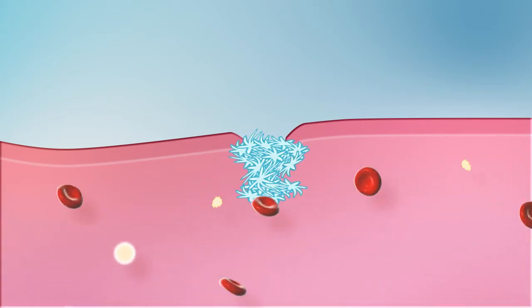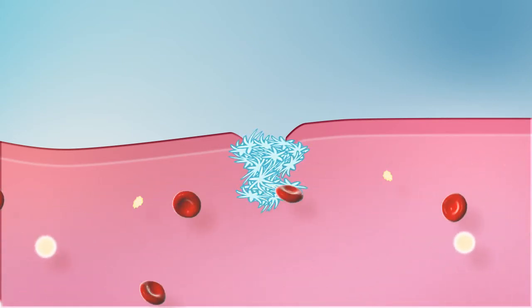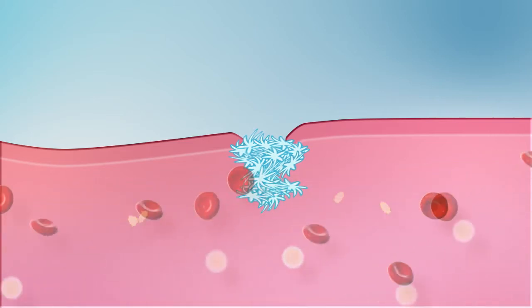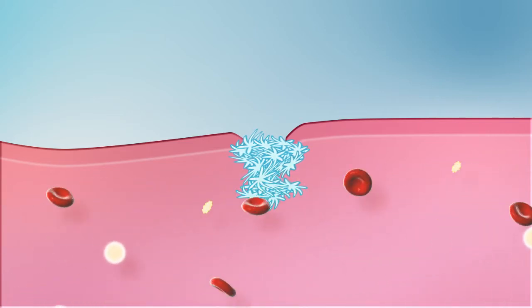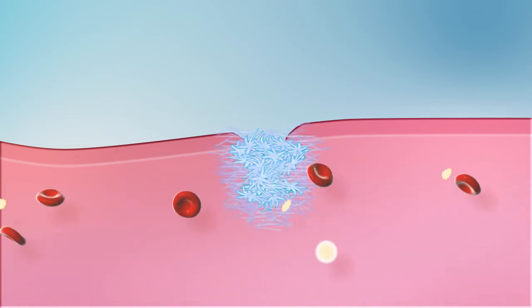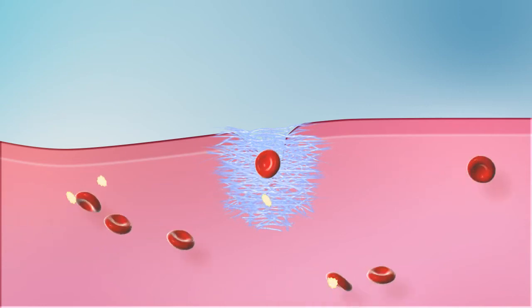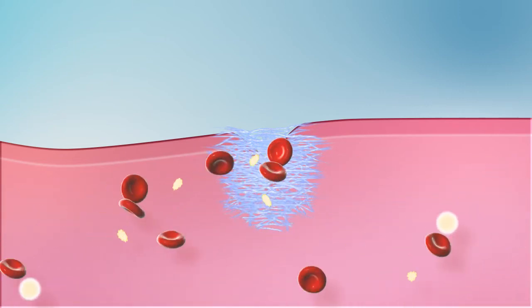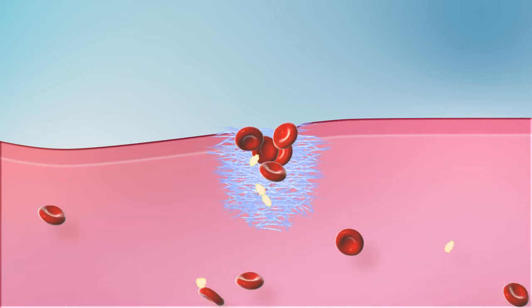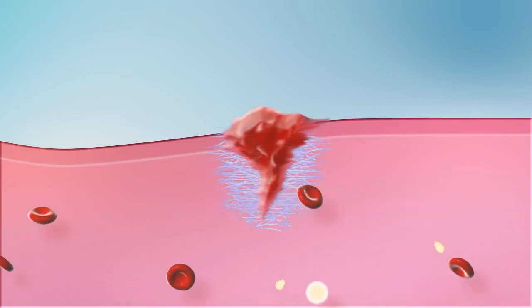Thrombin later converts soluble fibrinogen molecules into insoluble fibrin. Fibrin filaments form a fine network. Red blood cells and platelets get trapped in this network and blood clot is formed.